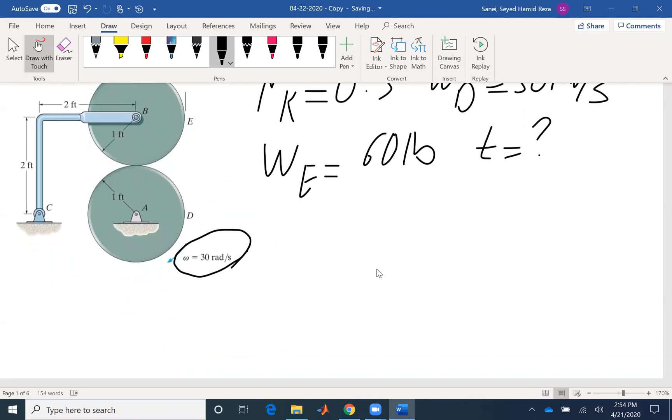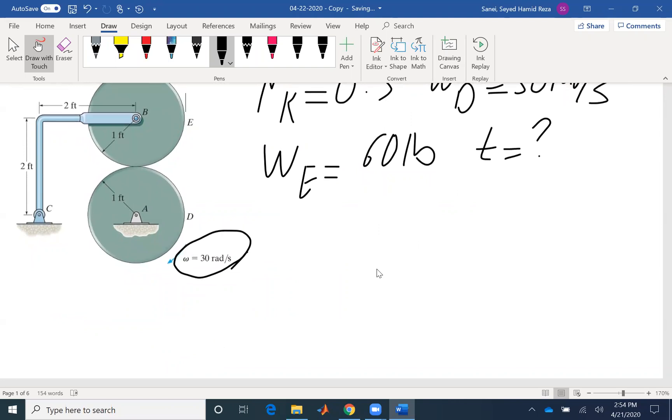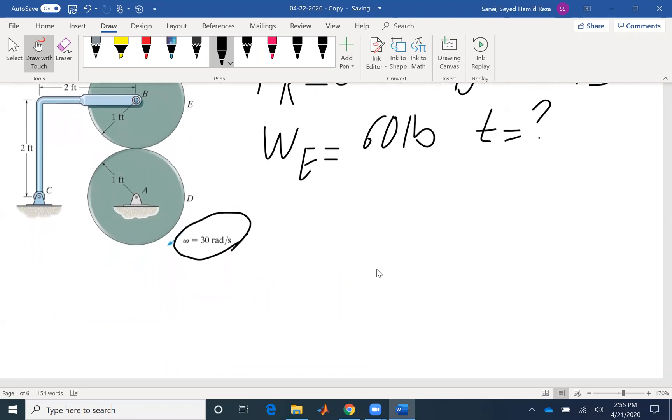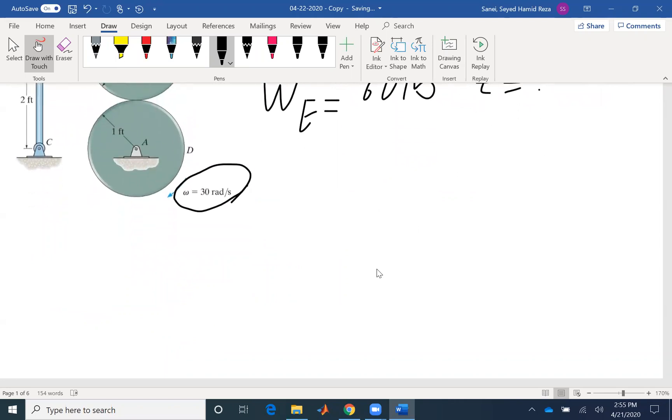The first task in solving kinetics of rigid body problems is to draw free-body diagram as well as the kinetic diagrams. The disk of interest is E, so I'm going to draw the free-body diagram of disk E.